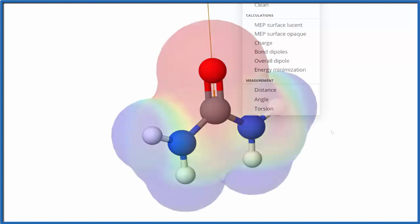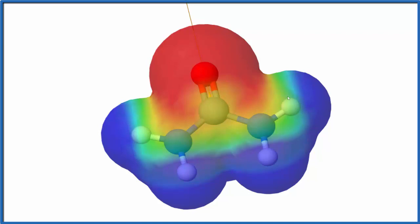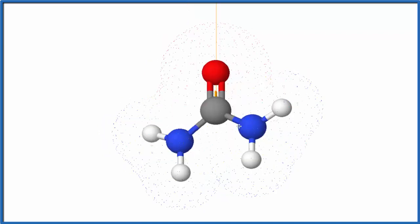So we look at the surface and you can see the red, that's more negative. The blue, that's going to be more positive. So we have a negative side and a positive side.